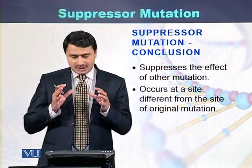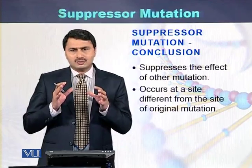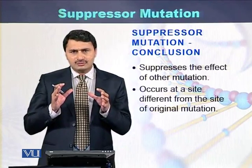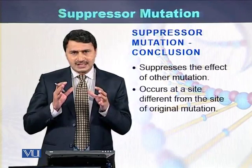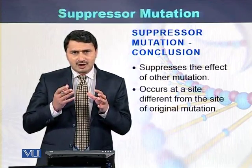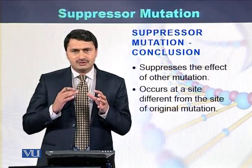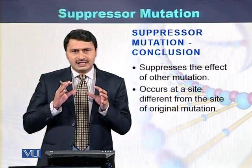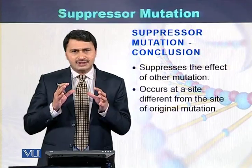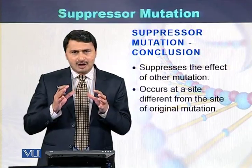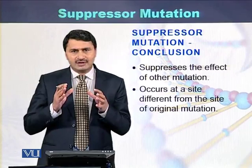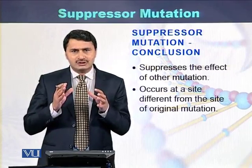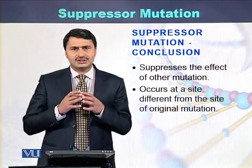In summary, suppressor mutations are those mutations that suppress the effect of one mutation. They can be in the form of intragenic suppression, meaning within the same gene, or intergenic suppression, meaning two mutations in two different genes.